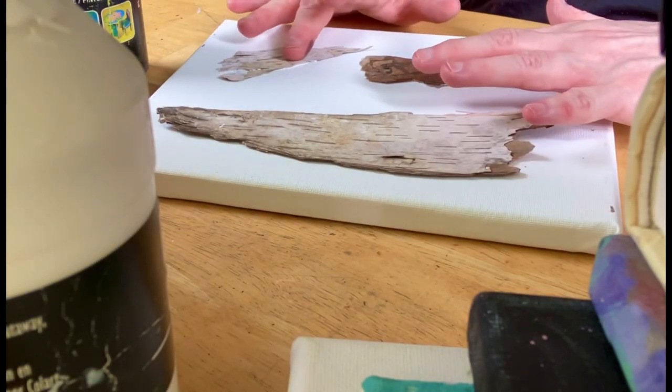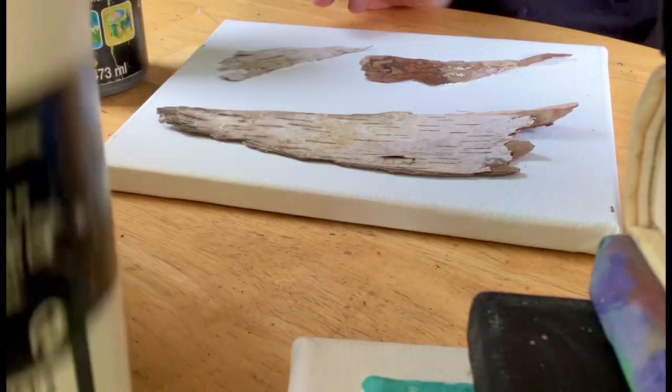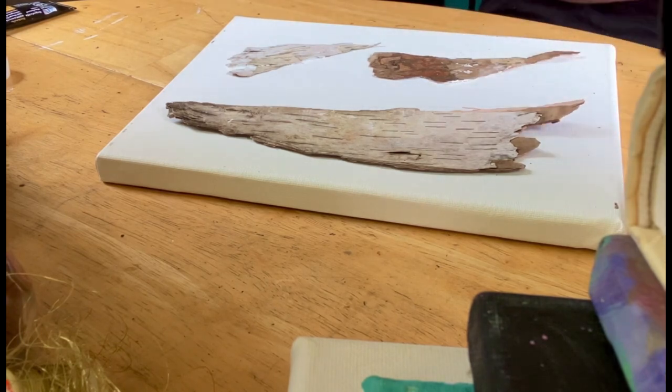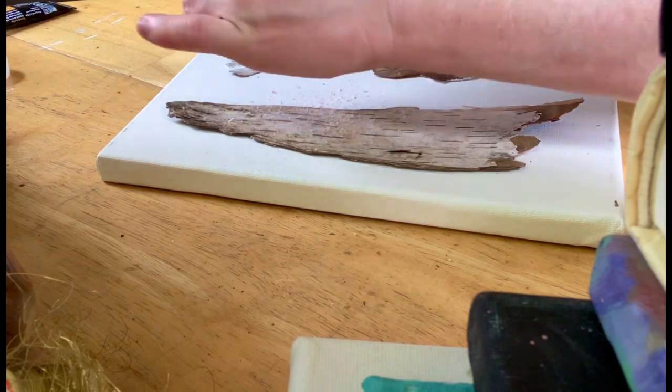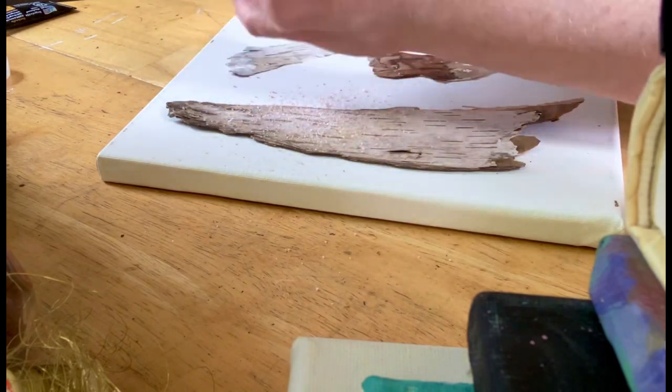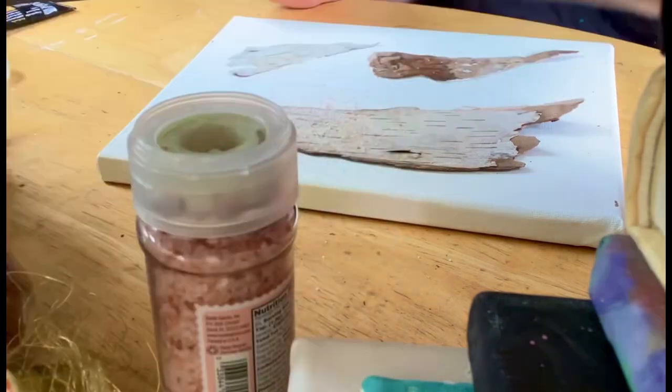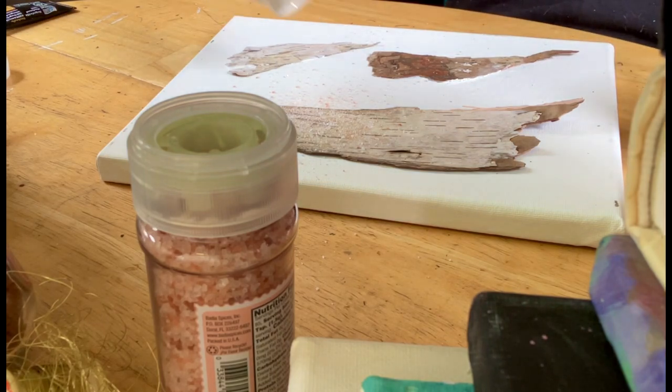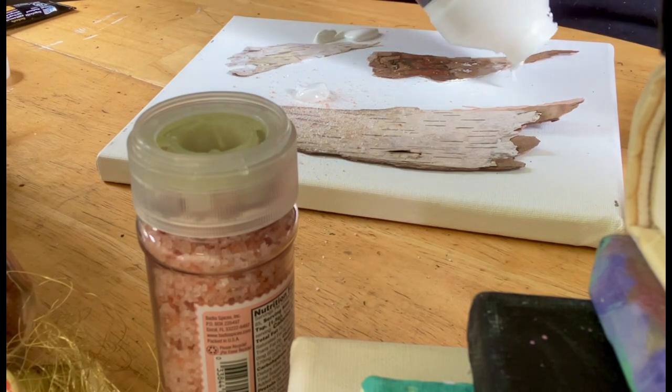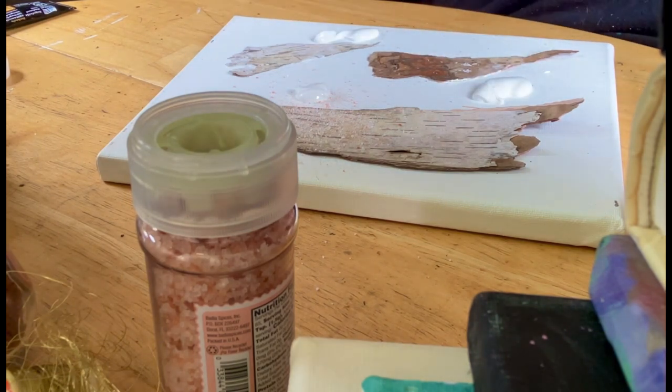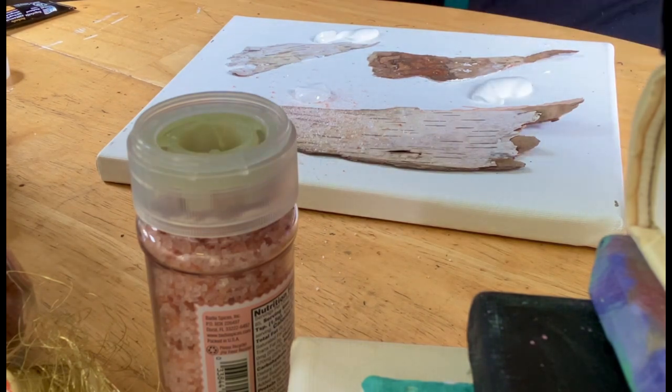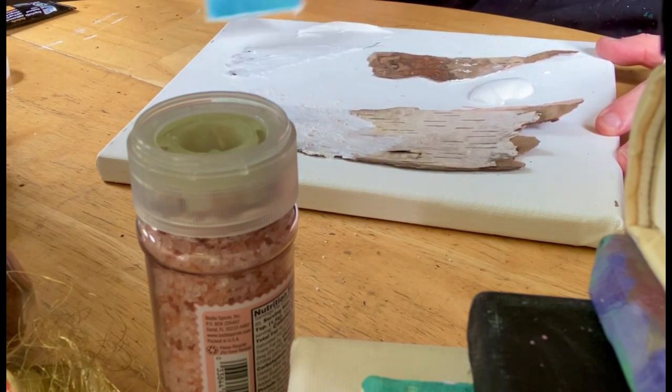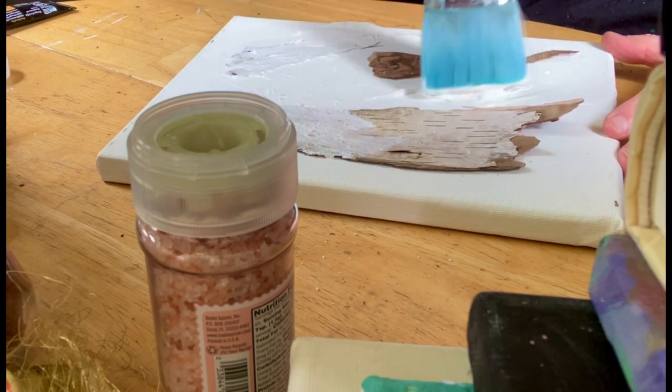These pieces of bark are affixed to the canvas with gesso. Next I'm adding some pink and red Himalayan salts, a few dollops of gesso. What I'm doing here is I'm building up texture.